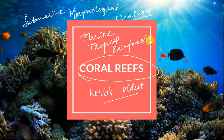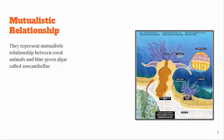In coral reefs we have different kinds of representations. There is a mutualistic relationship between coral animals, which depend on the coral reefs, and blue-green algae called zooxanthellae. The mutualistic relationship between the coral animals and blue-green algae is actually called zooxanthellae — as you can see in the picture, this is how the coral reefs are formed with their structures.